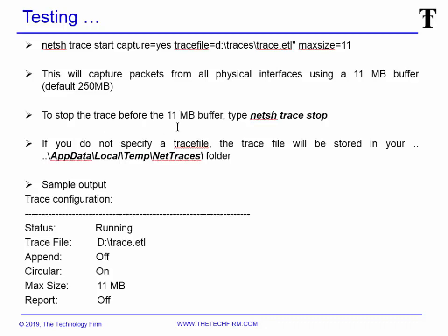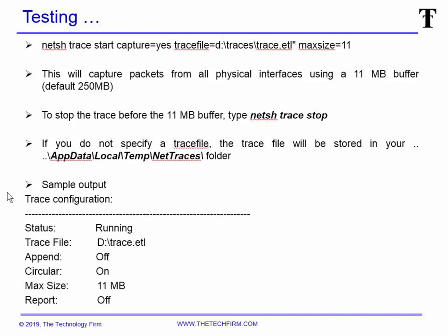To stop the trace before the 11 MB buffer is filled, just type netsh trace stop and it will stop the trace file. You can also get the status and that kind of thing. The important thing to keep in mind is that these are all command-line driven events, so you can put this in a batch file and do almost anything you want with it, which really adds flexibility and power. If you do not specify a trace file, the trace file gets stored in AppData\Local\Temp in a folder called NetTraces. When you type netsh trace start capture, you'll see a little output telling you it's running and where it's going to go.